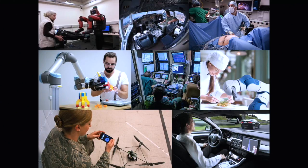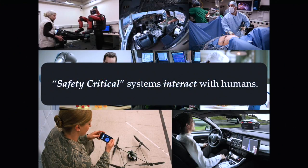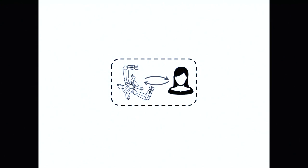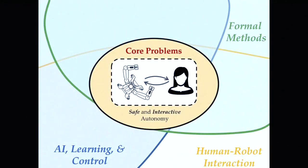But they have one major thing in common: they're all safety-critical, and they all need to interact with people. So if you're designing algorithms for these systems, we should really think about the safety aspect of it and the interaction that goes on between the robot and the human.